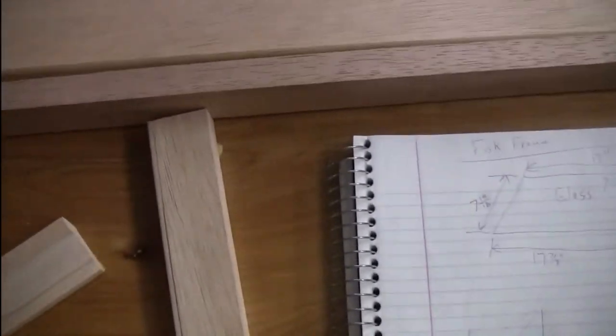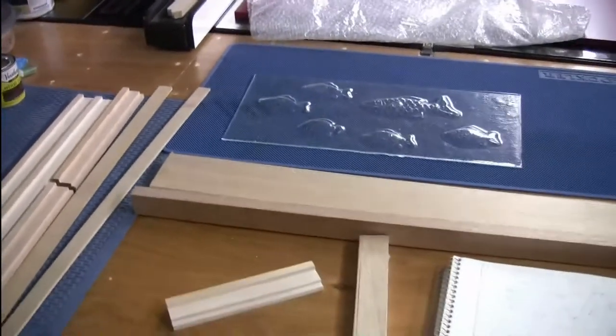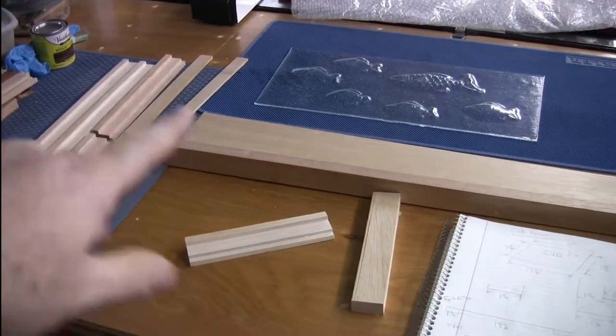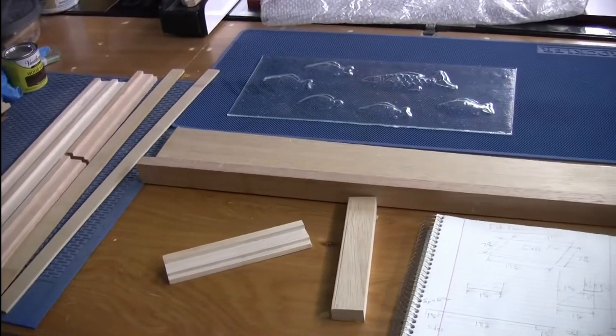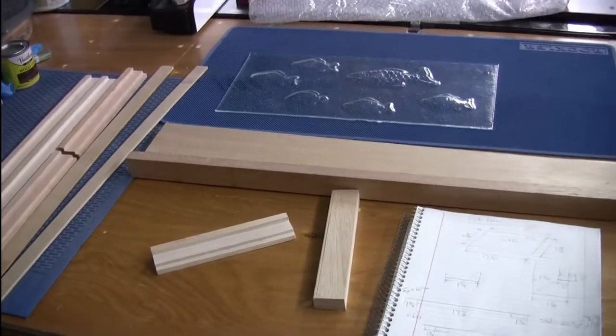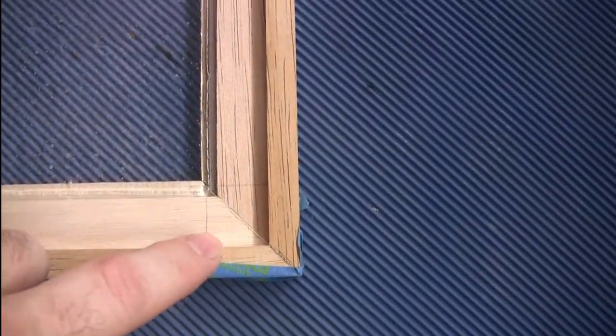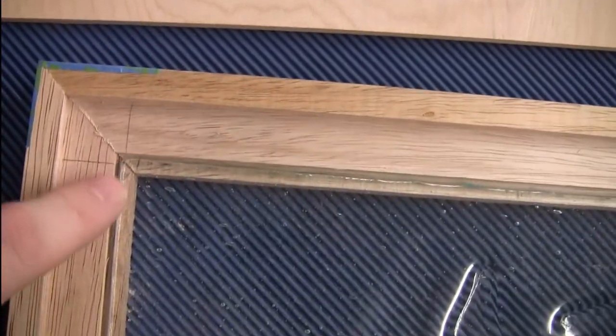So tomorrow we will see about doing the 45s on the corners, and then trimming the plywood to size. All right, we got the corners trimmed to 45s. That looks pretty good. And there's a little bit of a gap along the glass, which is also good.